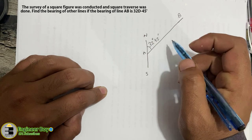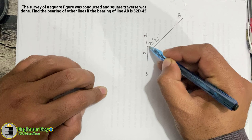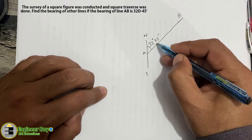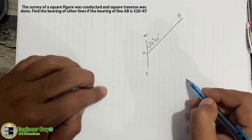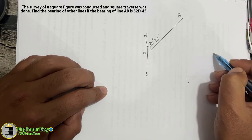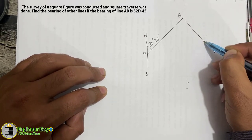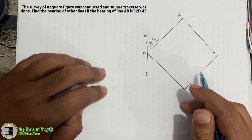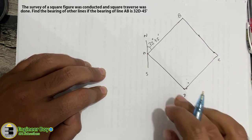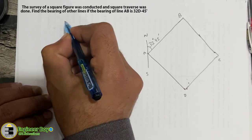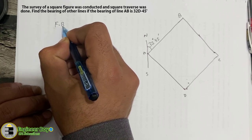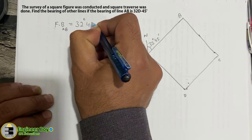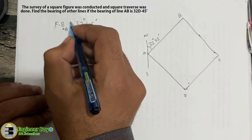The forebearing is always the bearing taken at the start of the line. This is whole circle bearing because cardinal directions like northeast or southeast are not specified here. Now let's draw the square traverse with corners B, C, and D. The only known data is the forebearing (FB) of line AB, which is 32 degrees and 45 minutes.